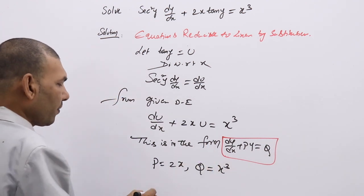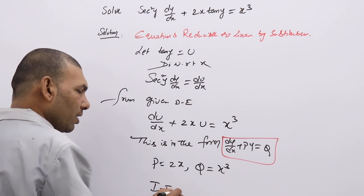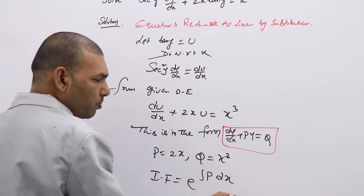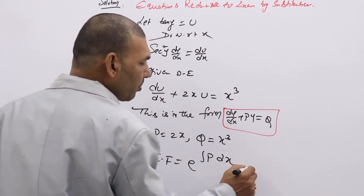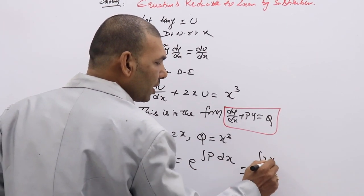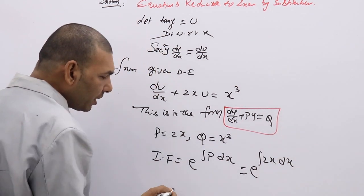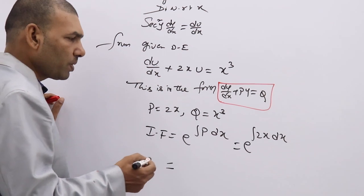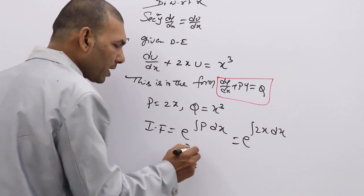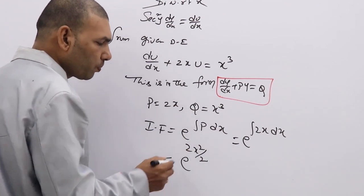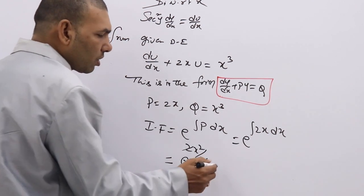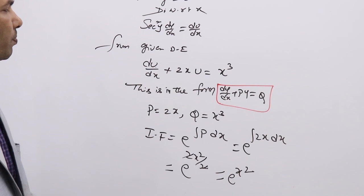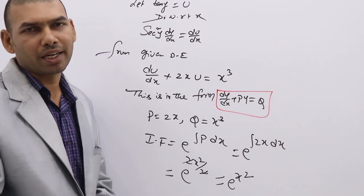Now the integrating factor is e^(∫p dx). What is p? p is 2x. So we compute e^(∫2x dx). The integral of 2x gives 2·(x²/2) = x². The 2s cancel, so the integrating factor is e^(x²).